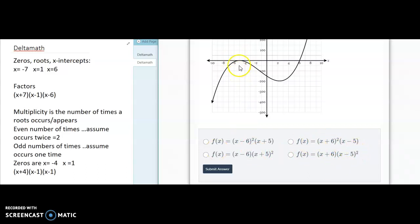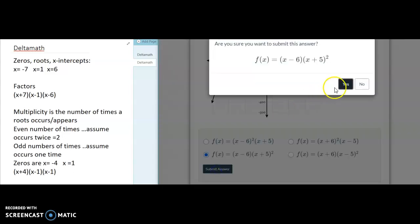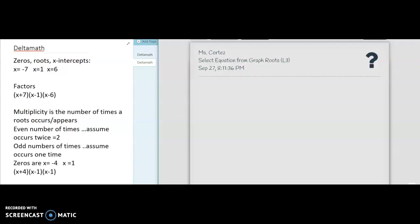So if this is x equals negative 5, it's going to be x plus 5 with the multiplicity of 2. And if this is positive 6, then it's x minus 6. So our answer is c on that one.